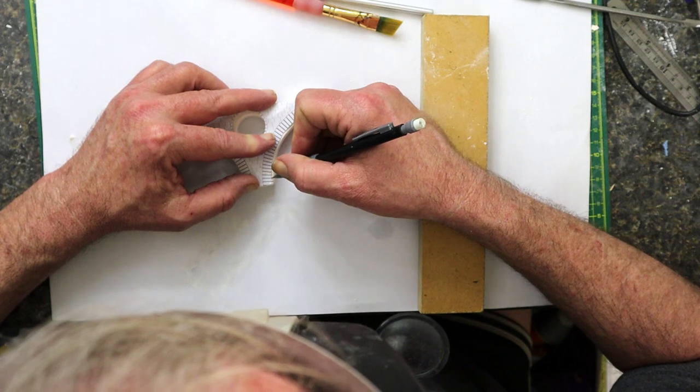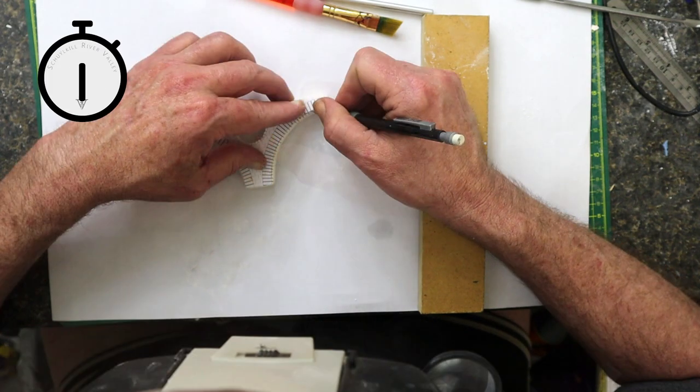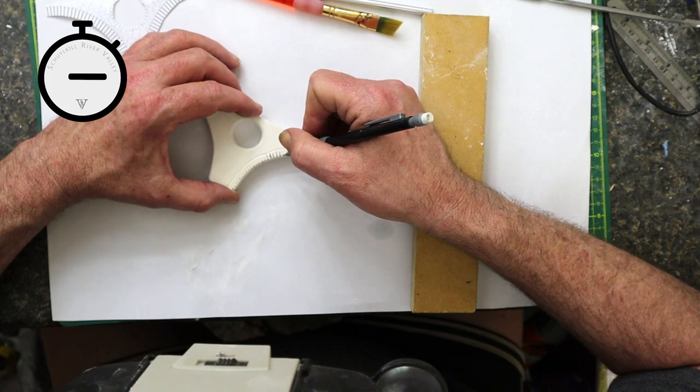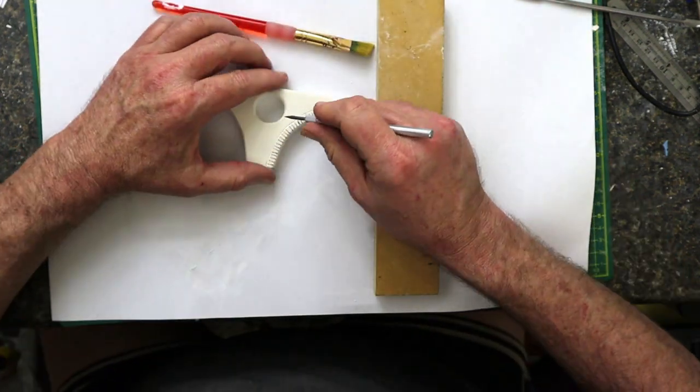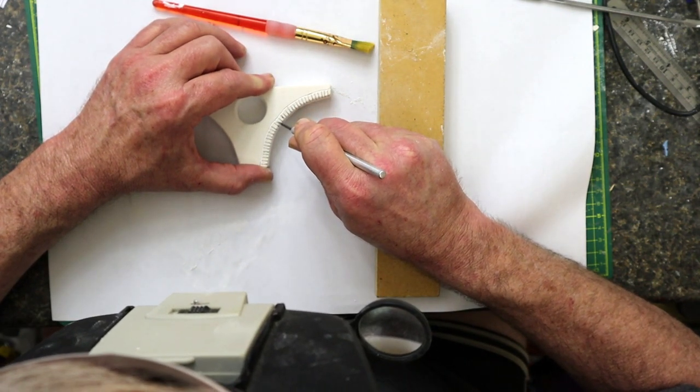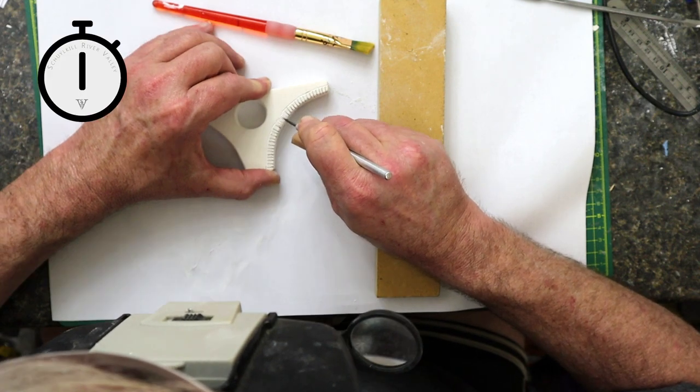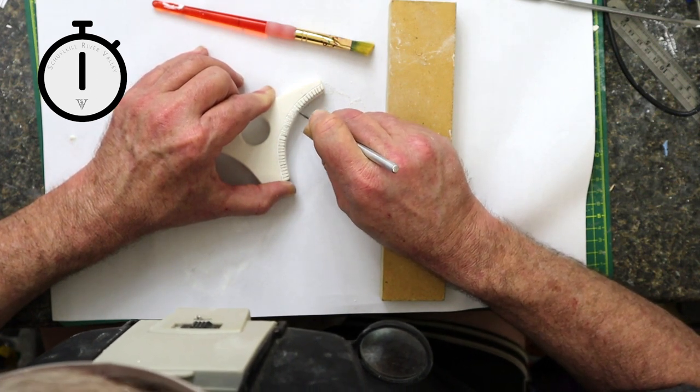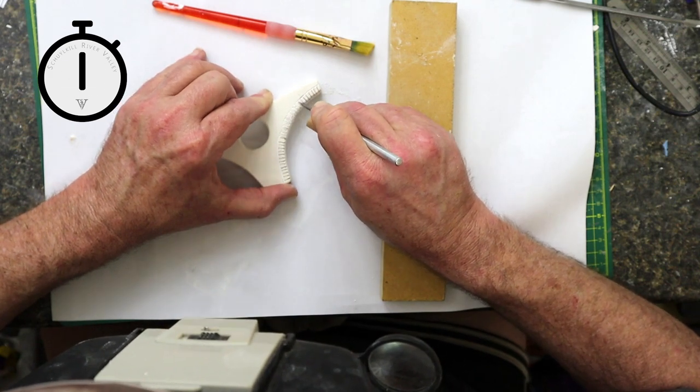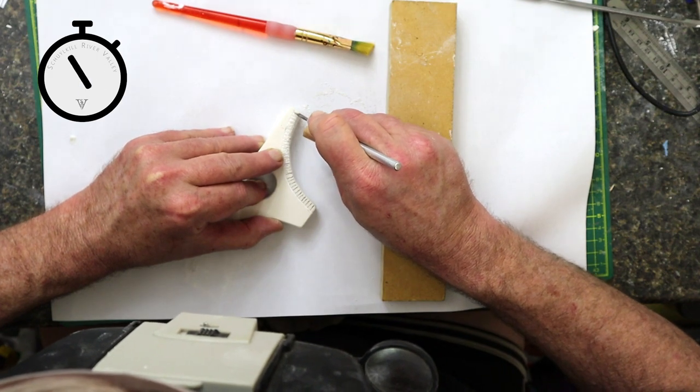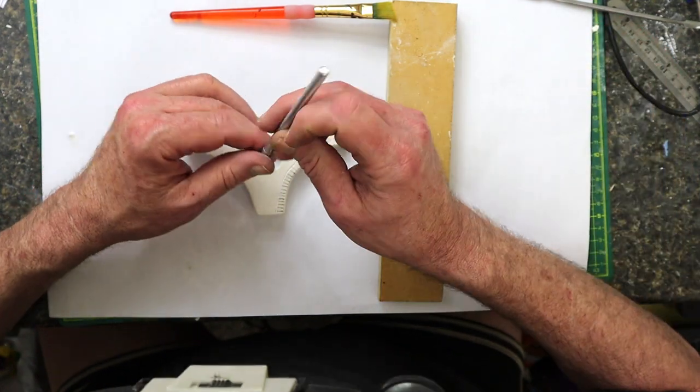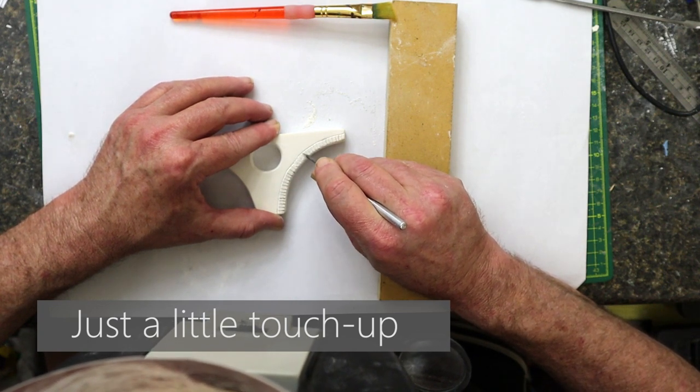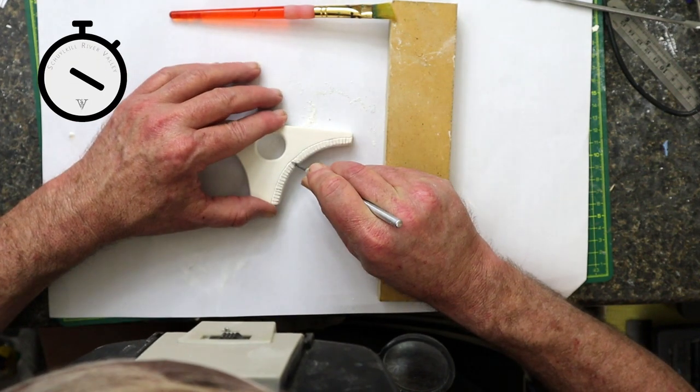Using one of the templates I made earlier, I marked the joints between the individual stones. Then it's back to the scribe to carve the joints. Just a little touch-up is needed to make sure the joints intersect where they should. And I continue carving the rest of the joints.